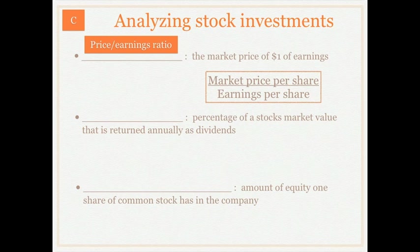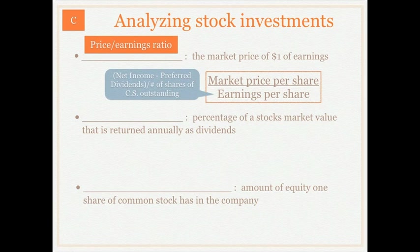Recall from the prior part in this series we discussed earnings per share. To calculate earnings per share we take our net income, subtract preferred dividends, and divide that by the number of shares of common stock outstanding. That will give us our earnings per share.